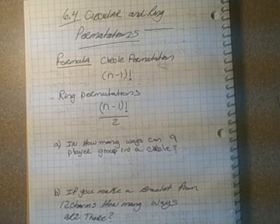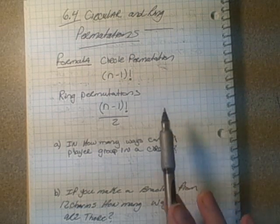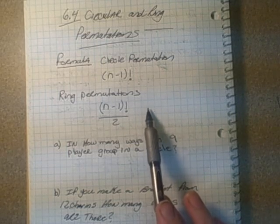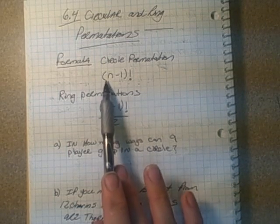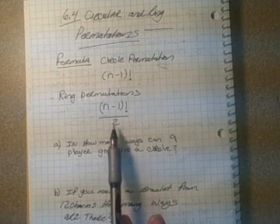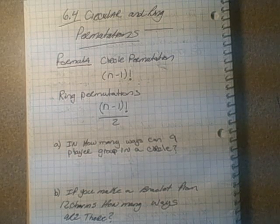We're going to look at circle permutations. Circle permutations have a formula in section 6.4 on page 202. You subtract 1 from the total in the circle. If it's a ring, you divide by 2 because you can flip a ring over and have the same permutation.